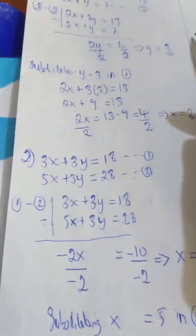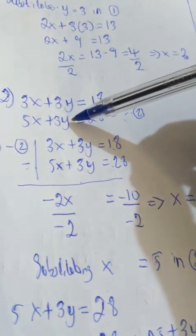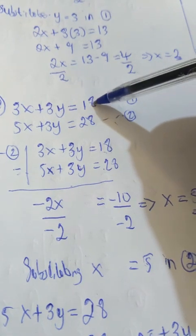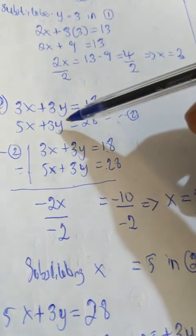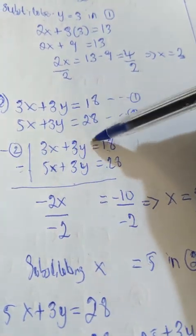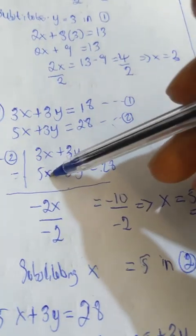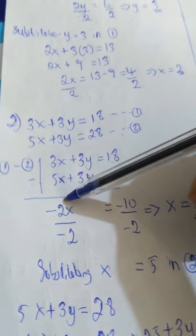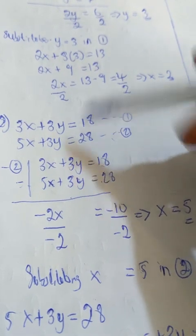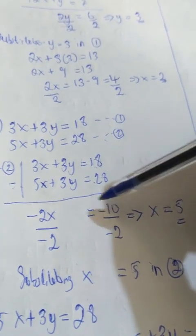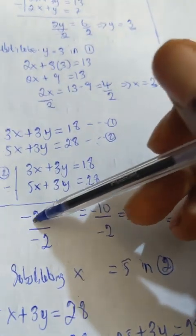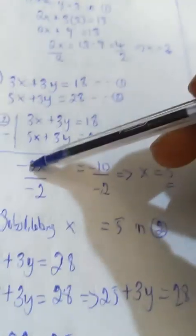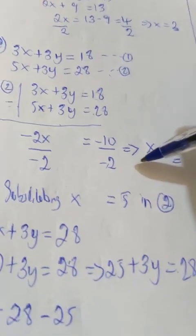Taking a second example, we have 3x plus 3y equal to 18 as equation one, and 5x plus 3y equal to 28 as equation two. Equation one minus equation two: 3x minus 5x gives minus 2x; 3y minus 3y cancels out; 18 minus 28 gives minus 10. Dividing both sides by minus 2, x equals 5.